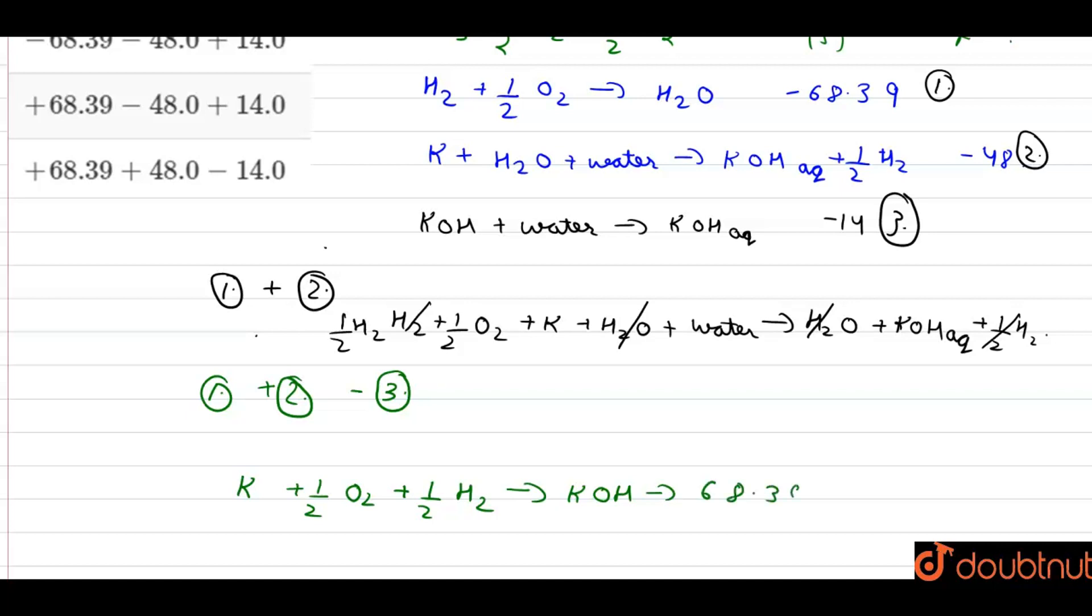Let's rearrange in terms of values, which is minus 68.39, plus minus 48, then minus 14. This is our answer. Let's match the options now.